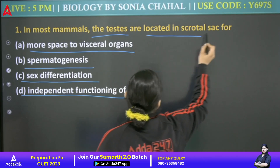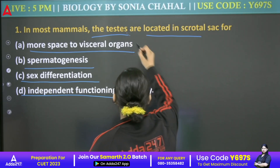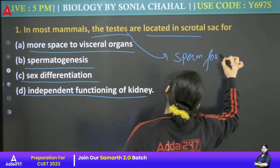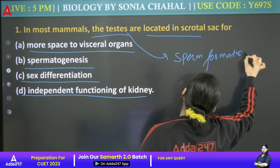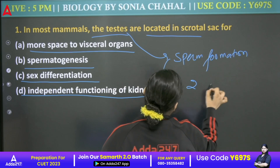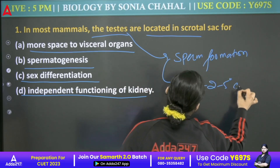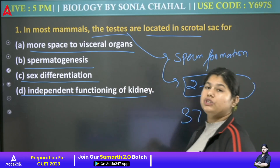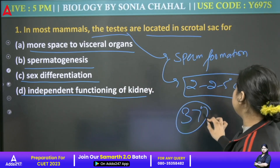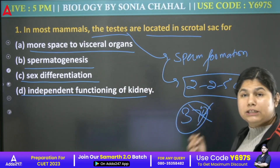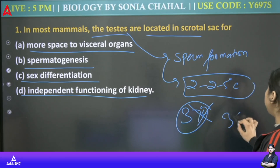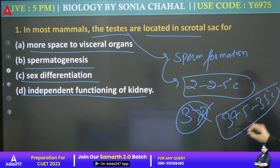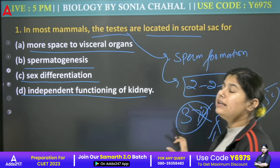The testes are in our scrotal sac. When sperm formation occurs, you need 2.5 degrees Celsius below body temperature. Your body temperature is 37 degrees Celsius, so sperm will not form at 37 degrees Celsius. Sperm formation occurs at around 34–35 degrees Celsius — that is 2.5 degrees Celsius below body temperature.